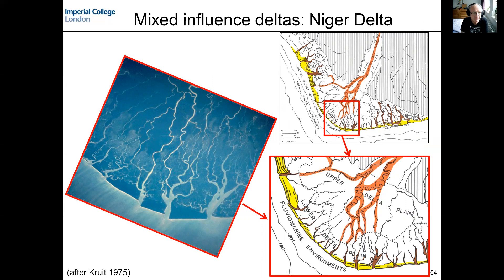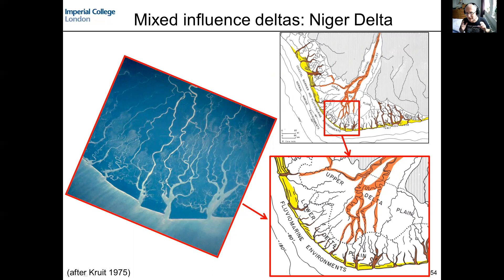Finally, while this lecture has focused on end members — wave-dominated shorelines and river-dominated deltas — many deltas have a mix of wave, tidal, and river mouth processes. A good example is the modern Niger delta: the Niger River feeds the delta; straight sections of shoreline between channels are wave-influenced; some channels are river-generated while others are tidal. Deltas, like any other shallow marine system, typically exhibit more than one process operating simultaneously.